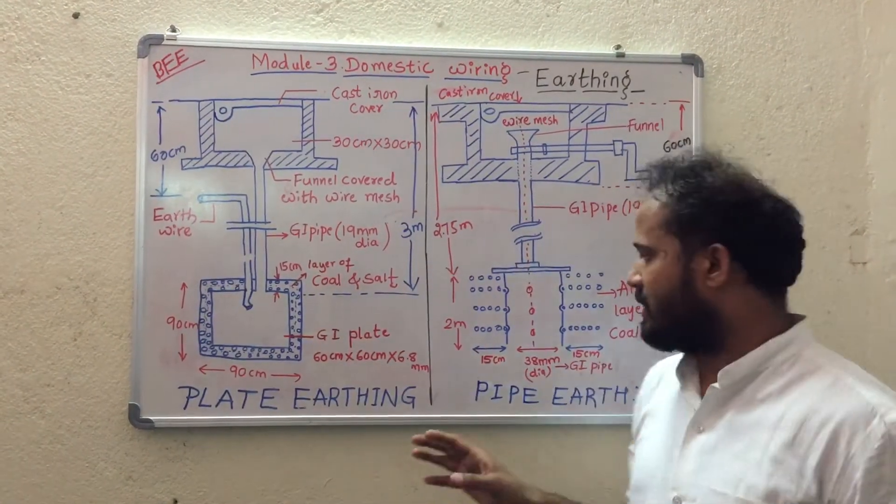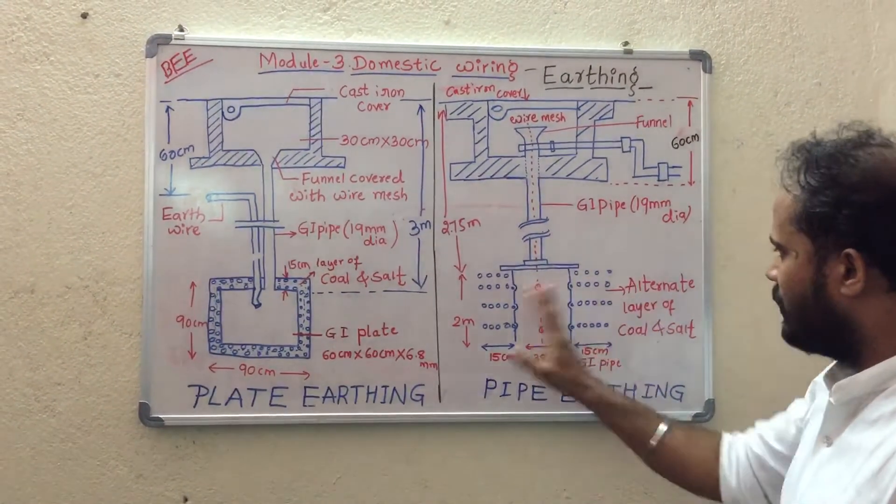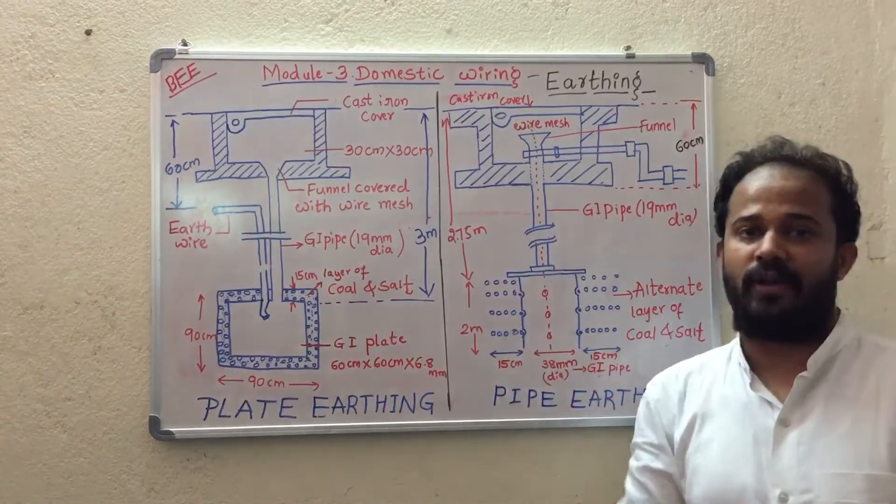One more advantage of pipe earthing is that the contact surface of this pipe with the earth is more, almost 2 meter, so it will be more effective.